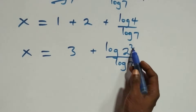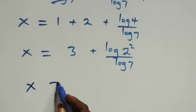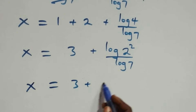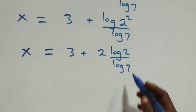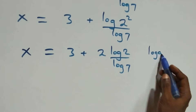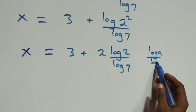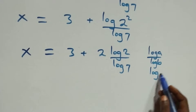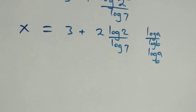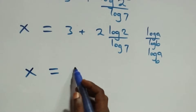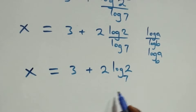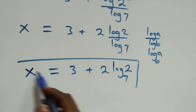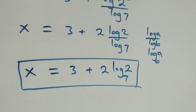Applying the power rule of logarithms, what we have becomes x equals 3 plus 2 log 2 over log 7. We then apply the change of base rule: log a over log b is the same thing as log a to base b. So what we have becomes x equals 3 plus 2 log 2 to base 7. This is the value of x in this problem.